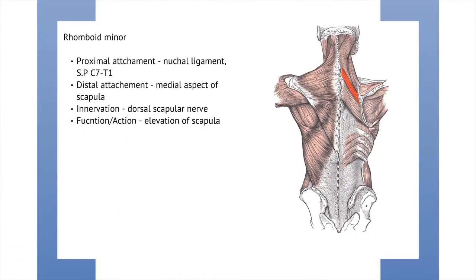The rhomboid muscles — let's start with the rhomboid minor. Its proximal attachment is the nuchal ligament, which we discussed earlier, and the spinous process of C7 to T1. The distal attachment is the medial aspect of the scapula. It's innervated by the dorsal scapular nerve, and its function is to elevate the scapula.